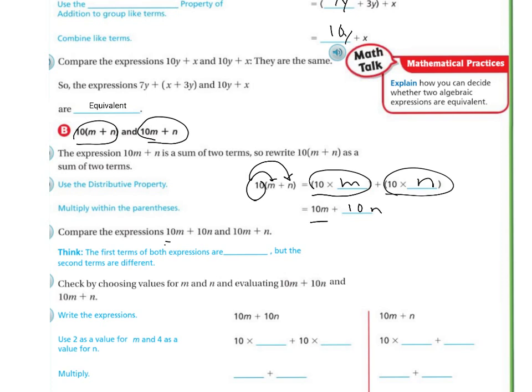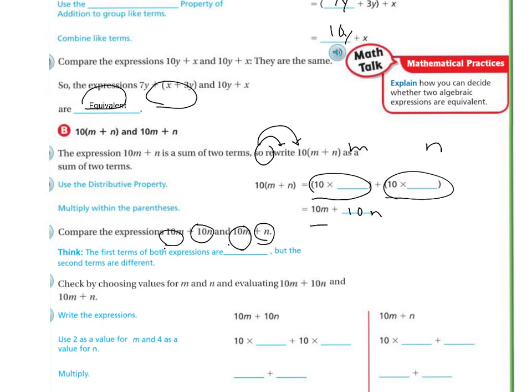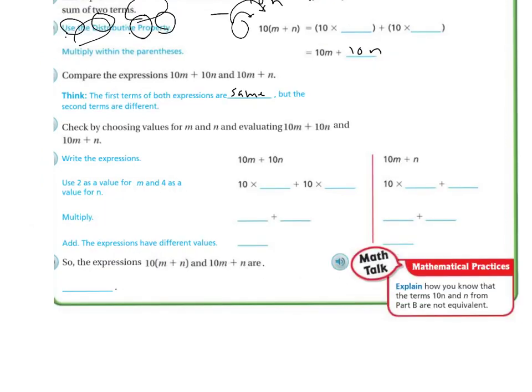If I'm going to compare the expressions 10m plus 10n and 10m plus n, the first terms of both expressions are 10m, right? But the second numbers are different, because this one is 10n, and the other one is just n. So they are going to be different.